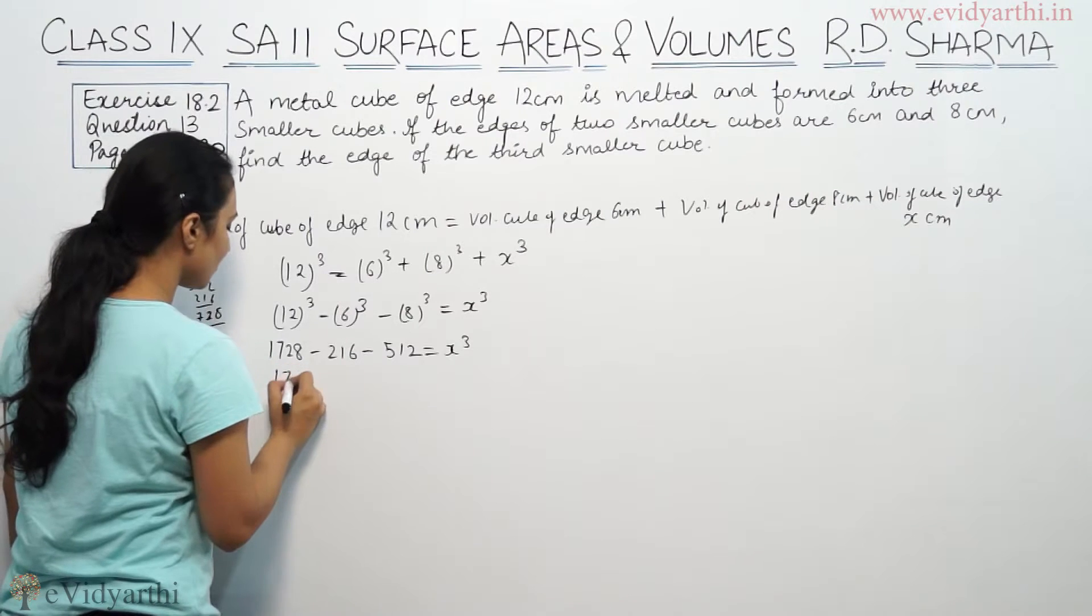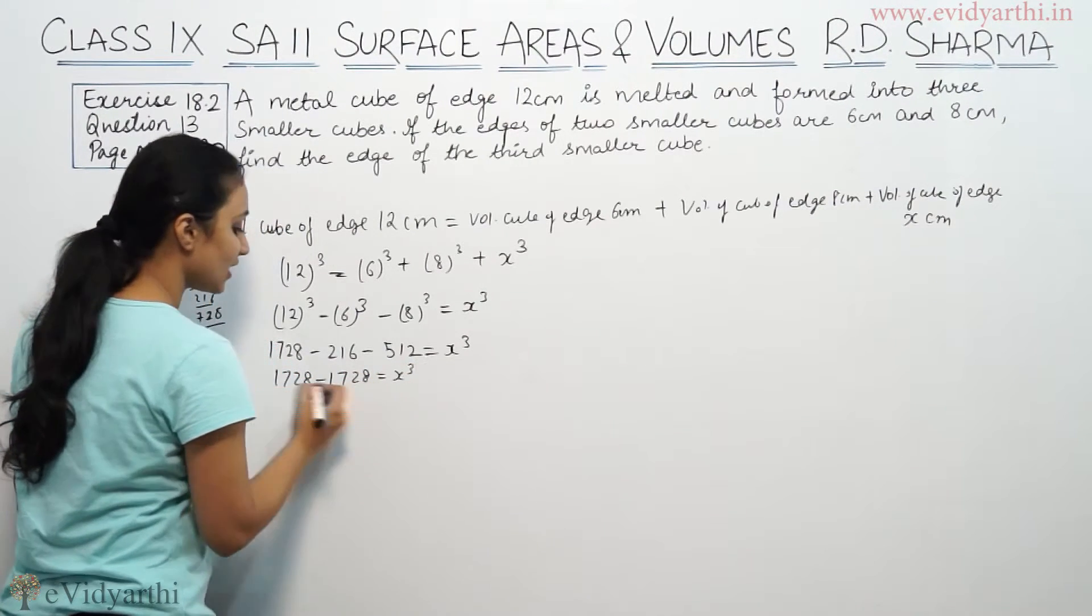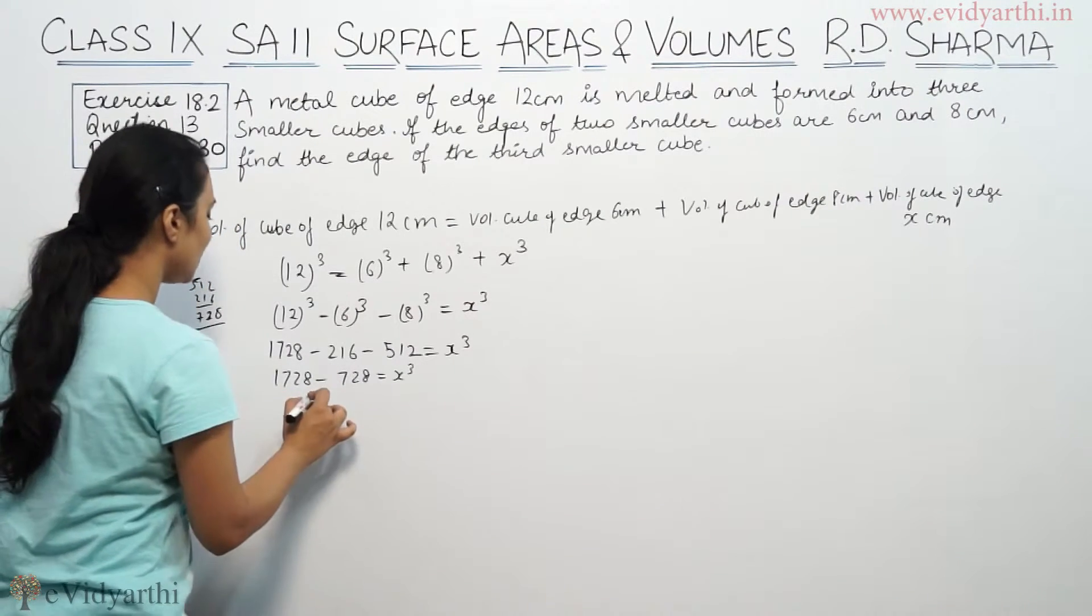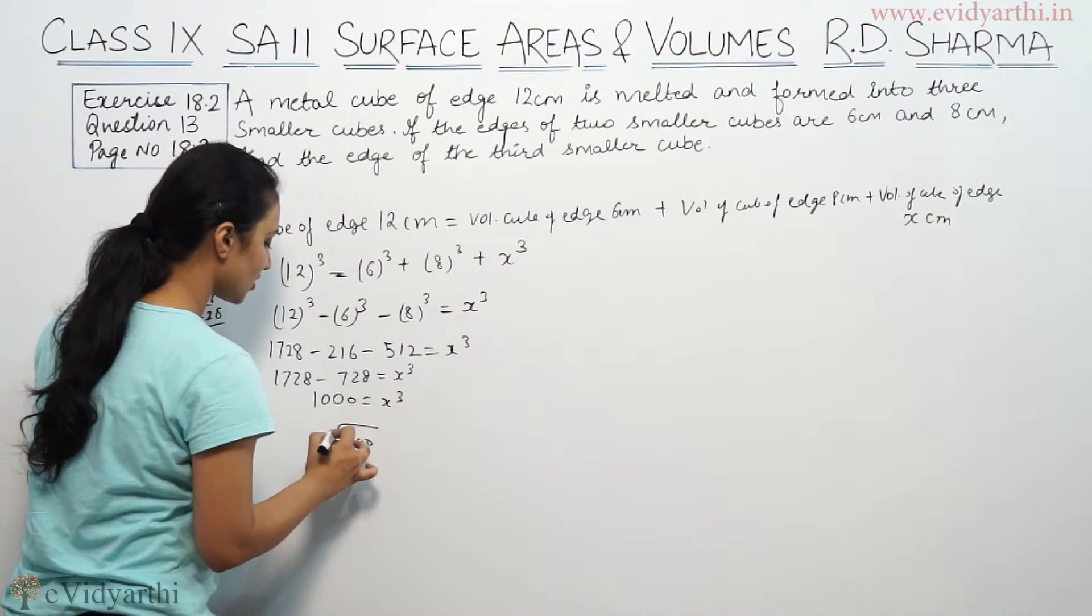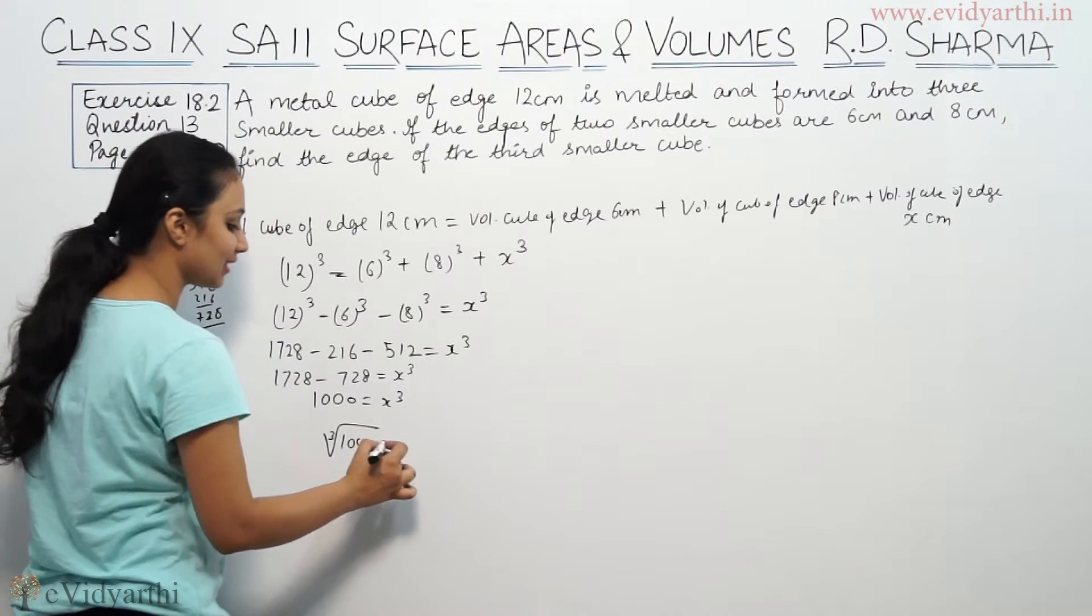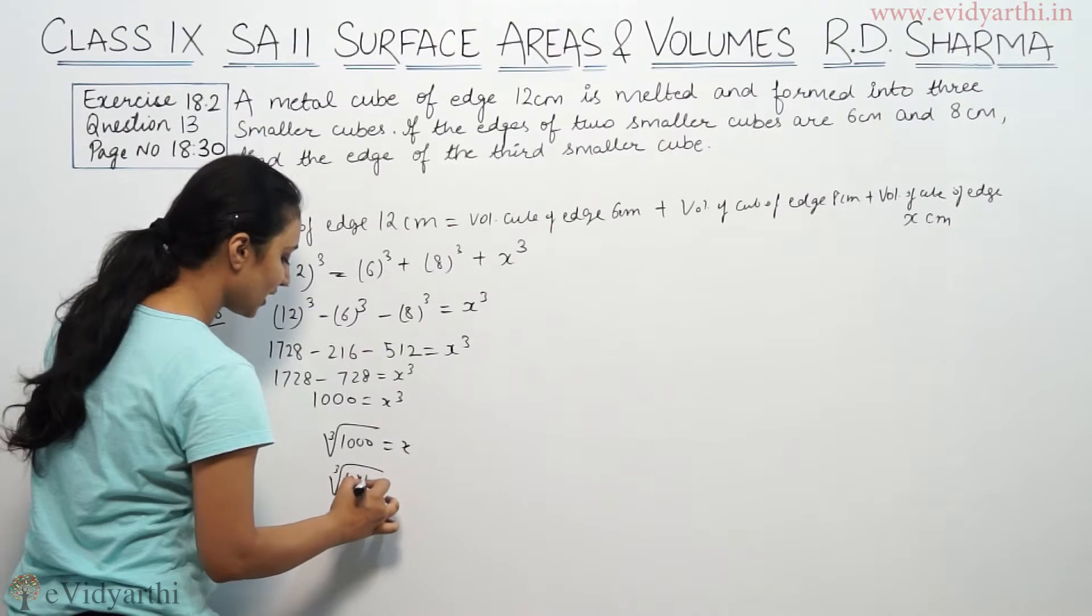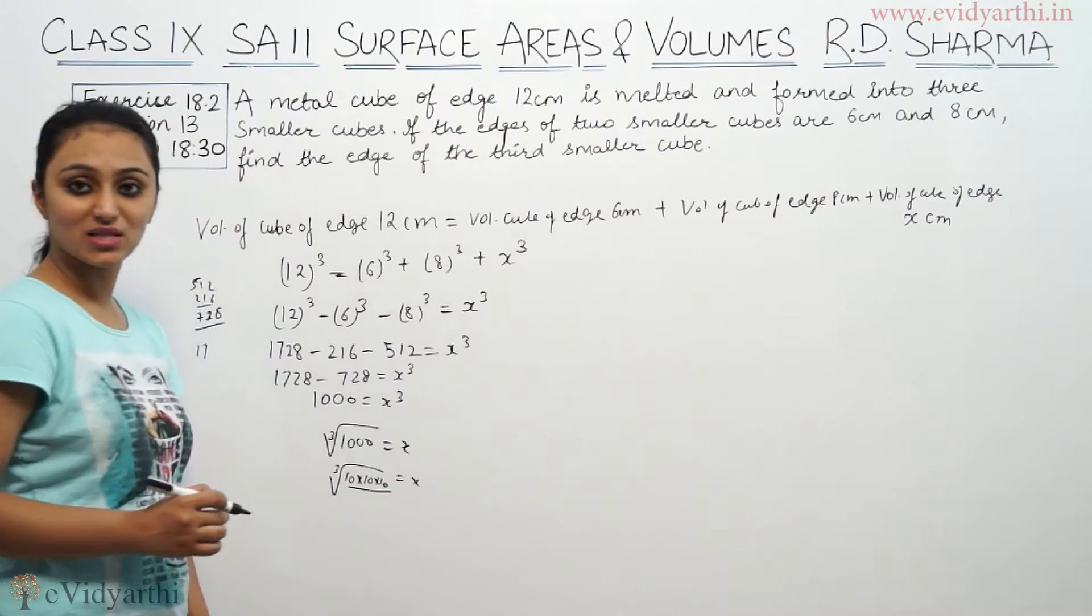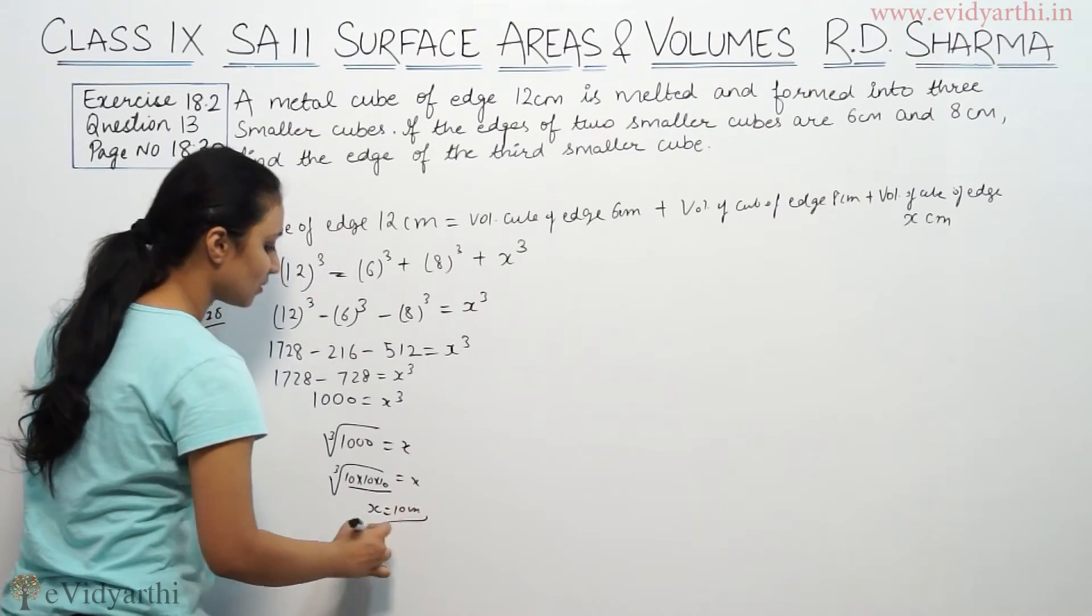So 1728 minus 728 will be 1000 equals x cube. So 1000 equals x cube. And you can turn the cube root to find x. Then x will be 10 cm.